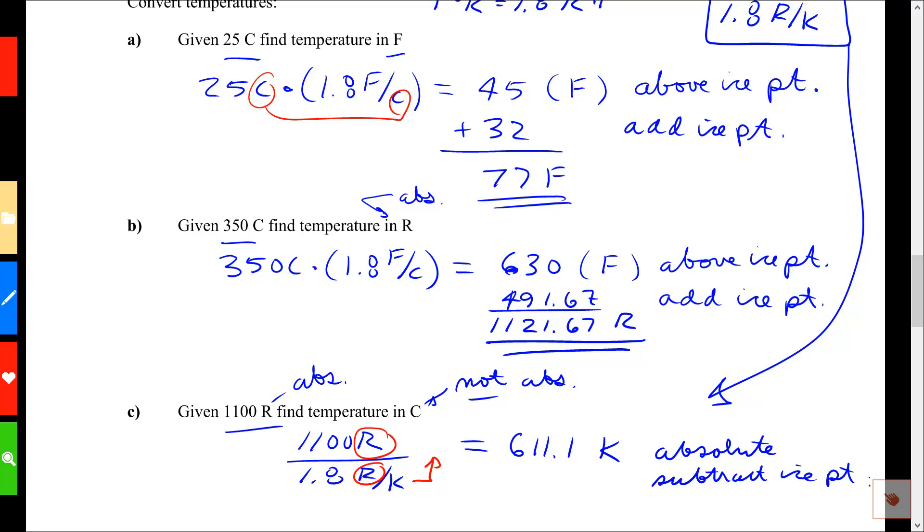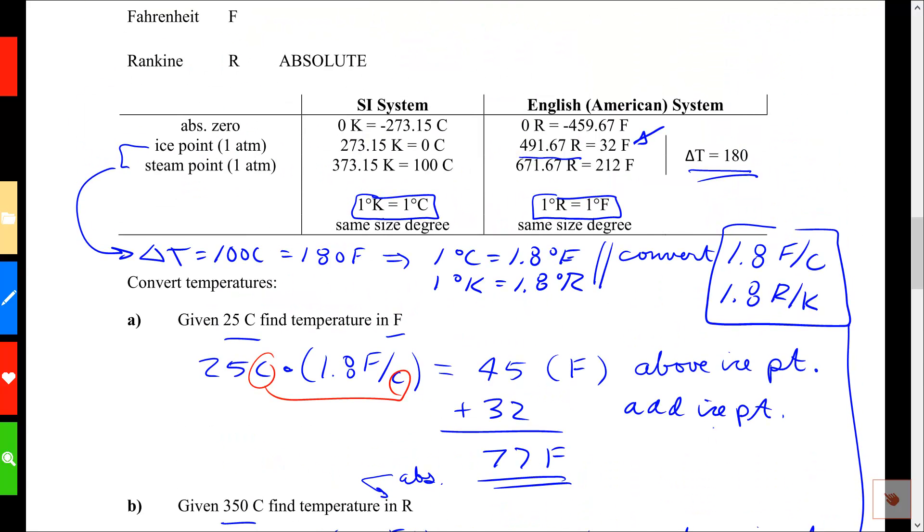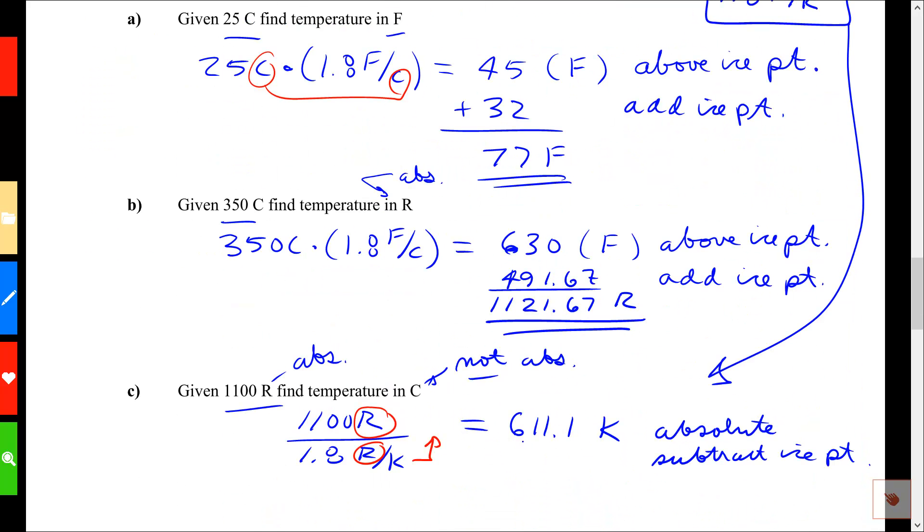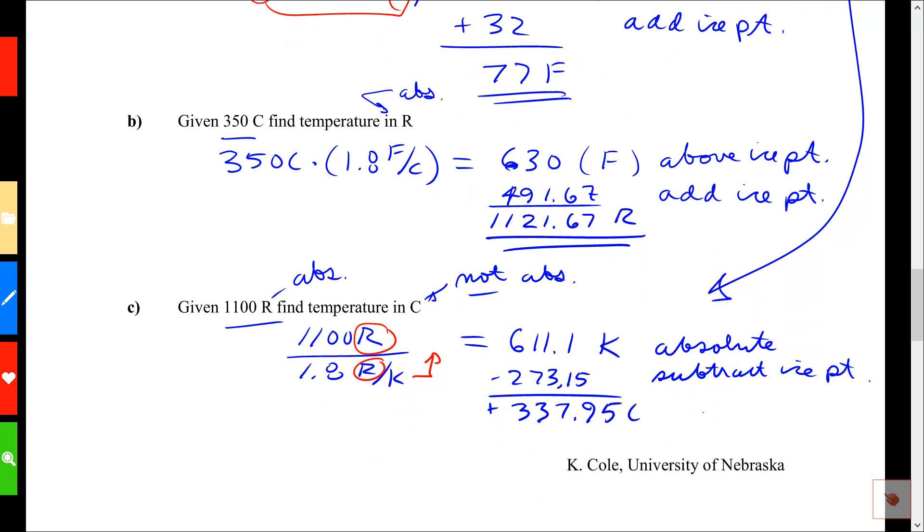And the ice point, let me scroll up. The ice point is 273 in centigrade, so I need to subtract that. I'm going to say minus 273.15. When I do that, I'm going to get plus 337.95, and that is indeed centigrade, and that is the temperature we wanted.